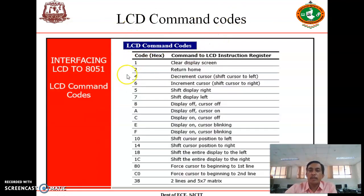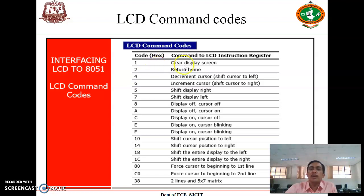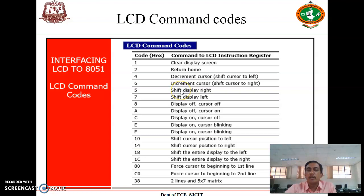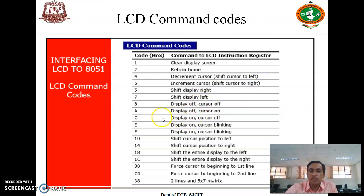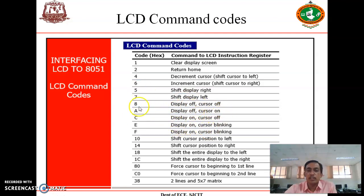These are the various LCD commands to program the LCD for a particular application. Not all commands are required for any particular program — depending on the requirement, you use suitable commands. For example, to clear the display before showing a new message, send command 01H. To return to home position, send 02H. To shift the cursor right the command is 05H, to shift display left it is 07H. To switch on the display, command 0EH or 0FH is used — 0FH also blinks the cursor.